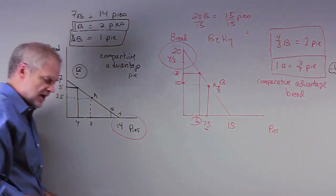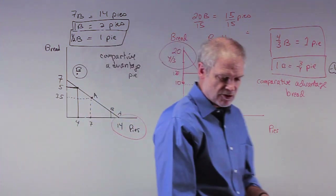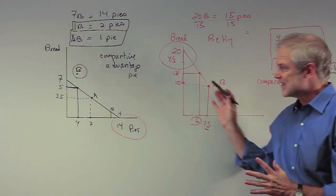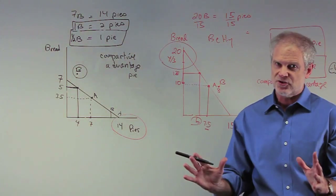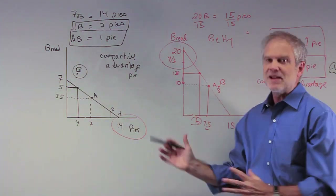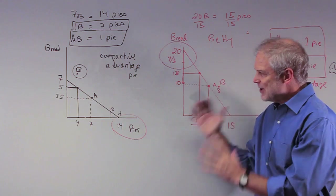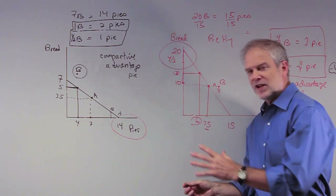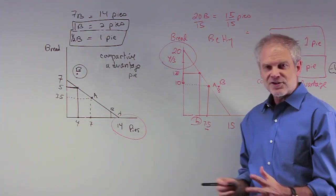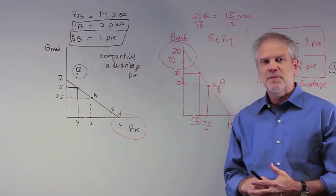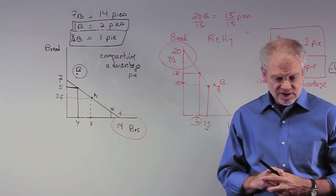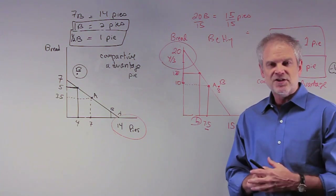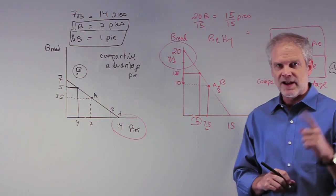Questions one through seven all come from this one same diagram — it's a great test question and something you're extremely likely to see on the test. Make sure you go through this. You can do this by yourself; review the video. If not, we can pick it up again in class. I'll come back and do problems eight, nine, and ten in a minute, and we'll finish up this chapter on comparative advantage.